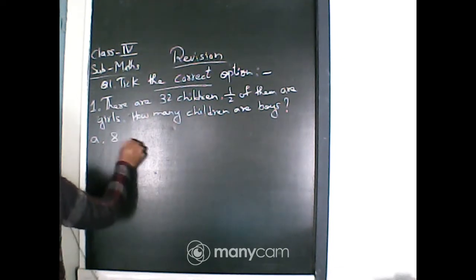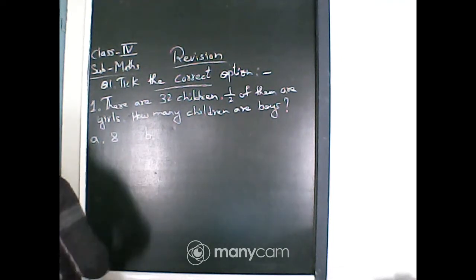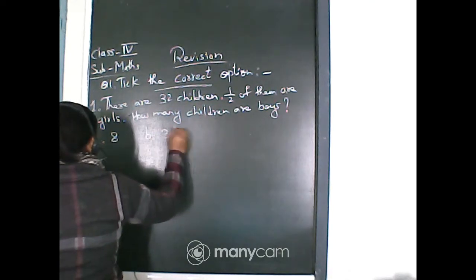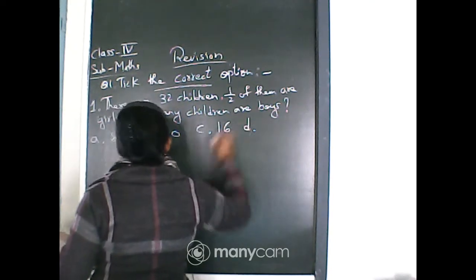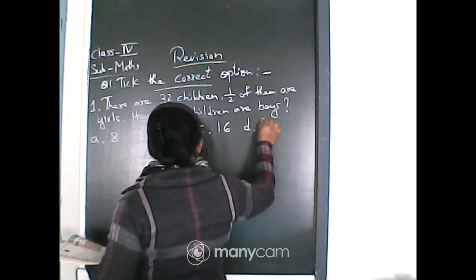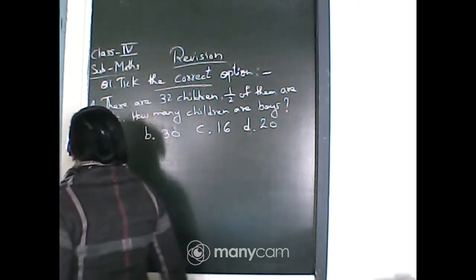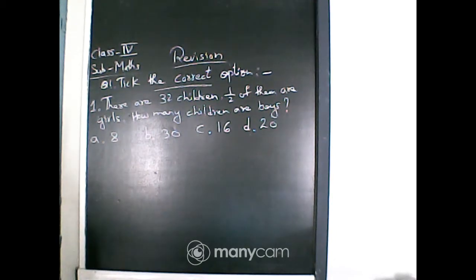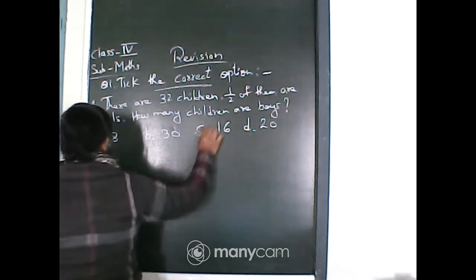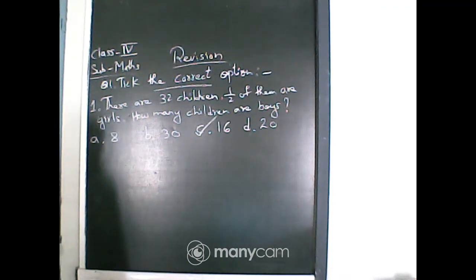The options are 8, 30, 16 and 20. So half of 32, as you know, is 16. So 16 are girls and obviously the next half is for the boys. That means 16 are girls and 16 are boys. So the answer will be option C. Give a tick mark in option C.